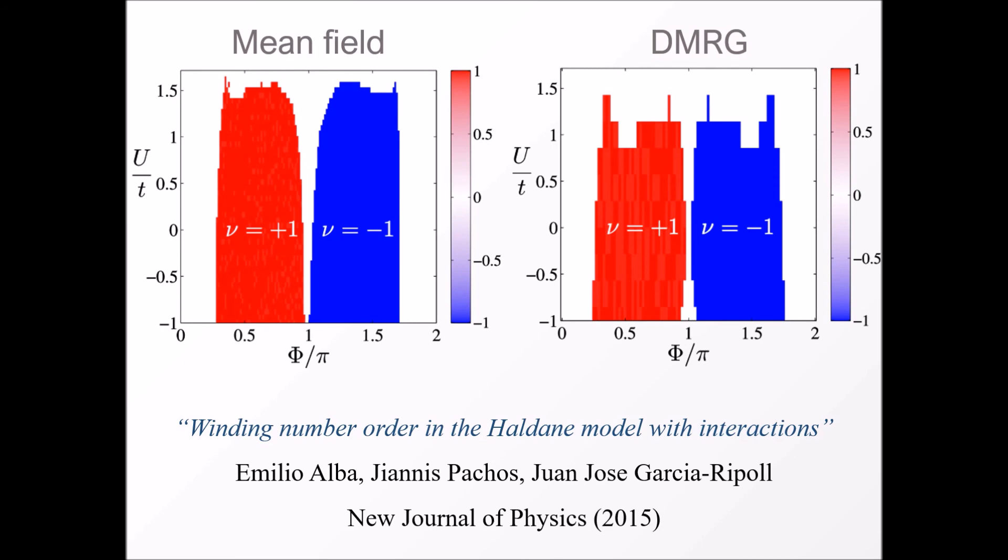They show that the winding number is largely resilient to the presence of both attractive and repulsive interactions.